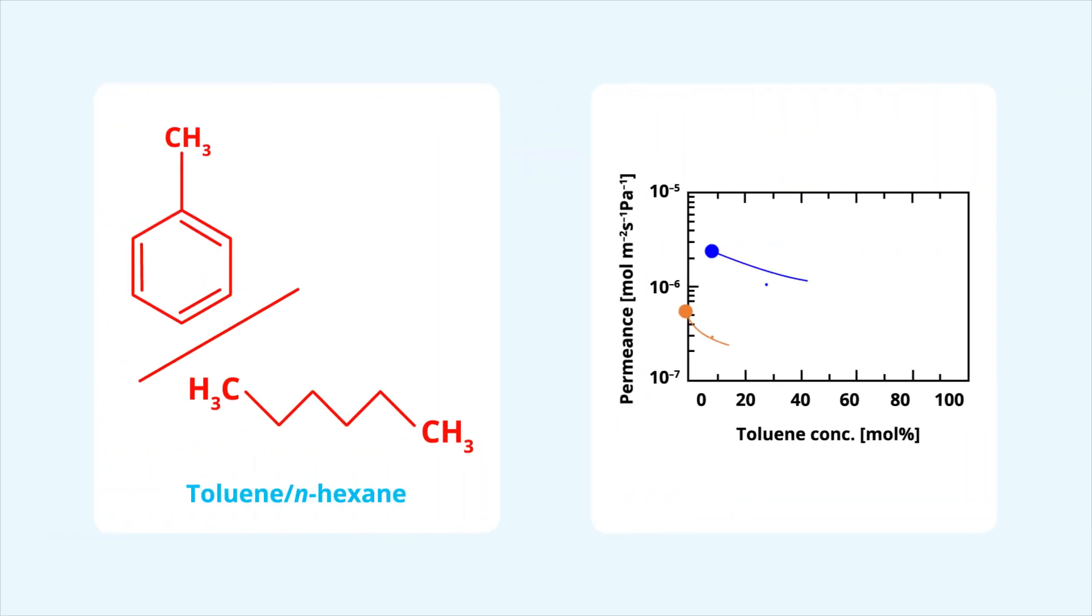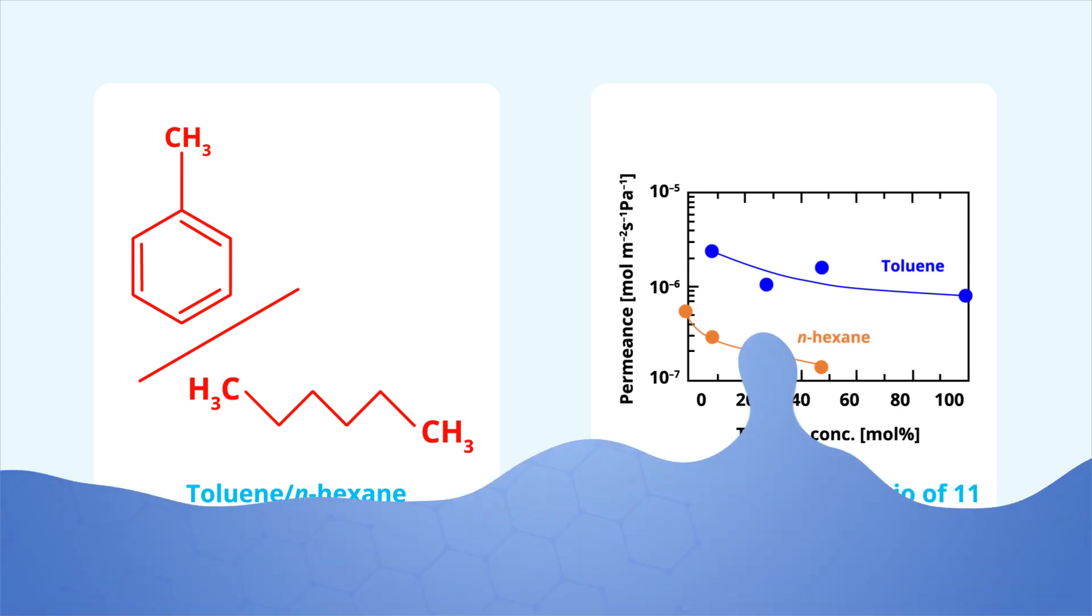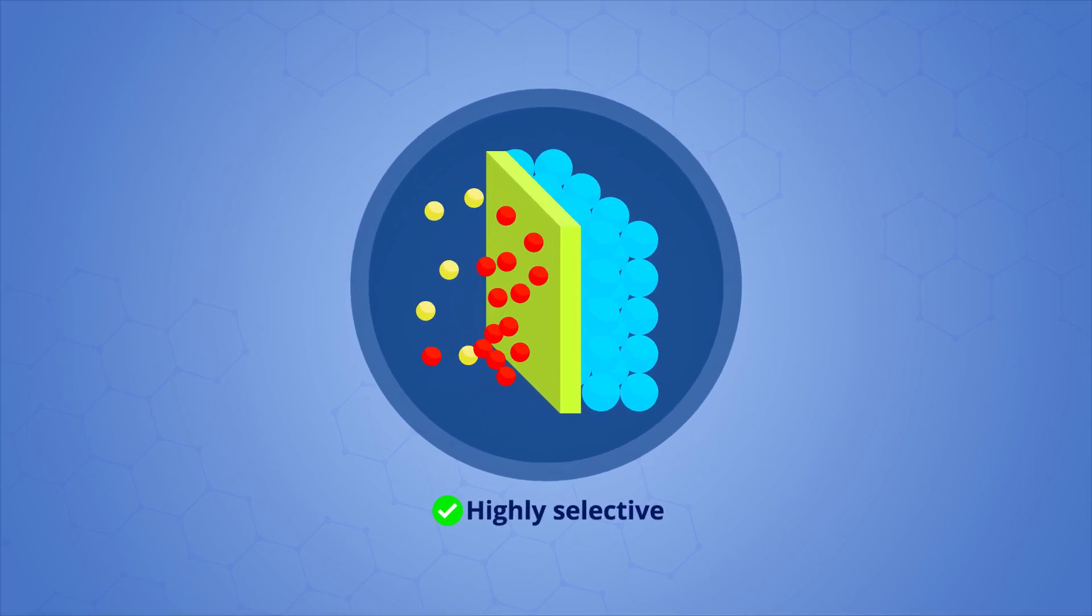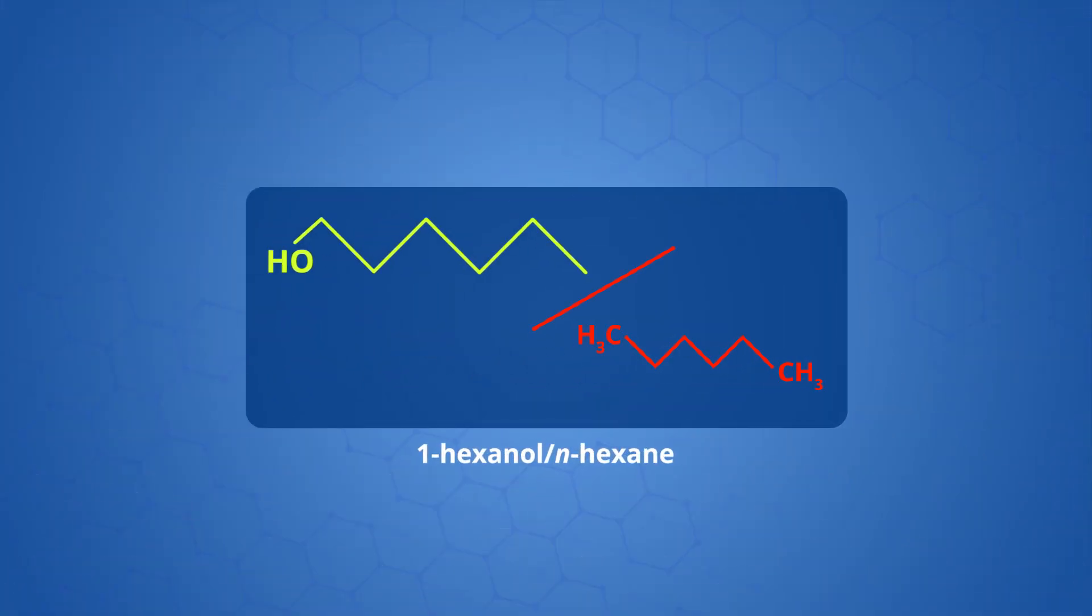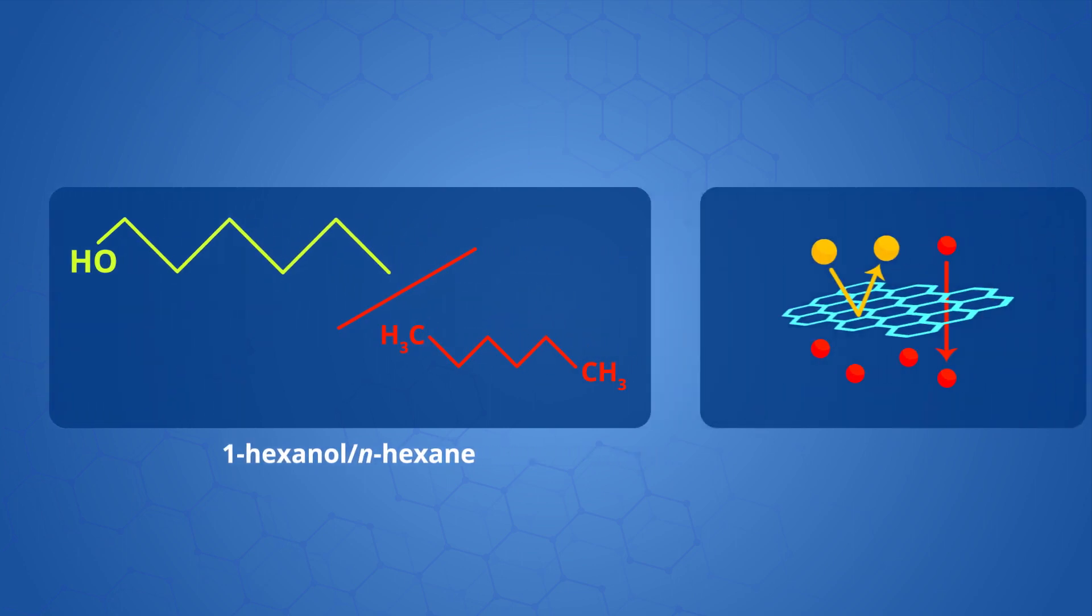The membranes performed exceptionally well when separating toluene from n-hexane, achieving a high permeance ratio of 11. Additionally, the membranes were highly selective when separating 1-hexanol from n-hexane, which is typically difficult to achieve with molecular sieves.